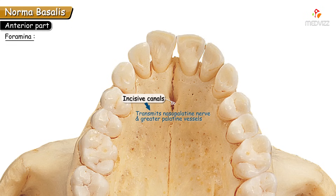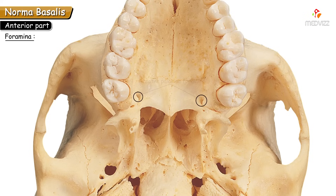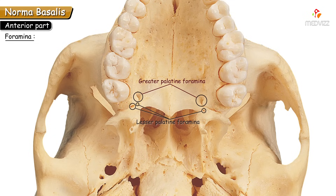The greater palatine foramen and lesser palatine foramen are appreciated on the posterolateral aspect of the hard palate. The greater palatine foramina are present on each side, are slightly larger and more prominent, and transmit the greater palatine vessels and nerve. The greater palatine foramen is present near the palatomaxillary suture.